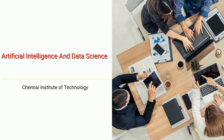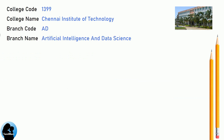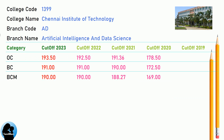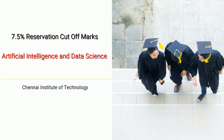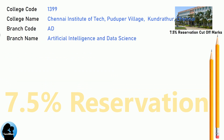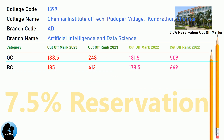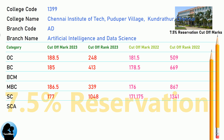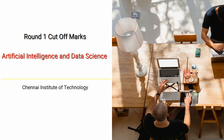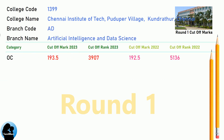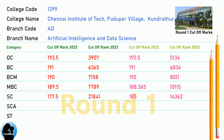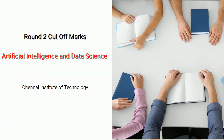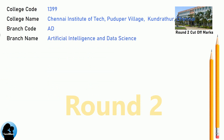DNA Cut-off for Chennai Institute of Technology in Artificial Intelligence and Data Science. DNA 7.5 Reservation Cut-off for Chennai Institute of Technology in Artificial Intelligence and Data Science. DNA Round 1 Cut-off for Chennai Institute of Technology in Artificial Intelligence and Data Science. DNA Round 2 Cut-off for Chennai Institute of Technology in Artificial Intelligence and Data Science.